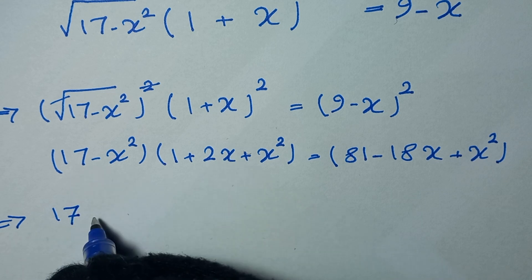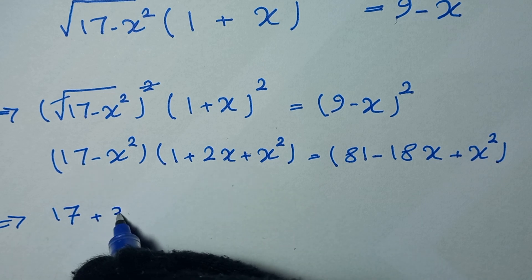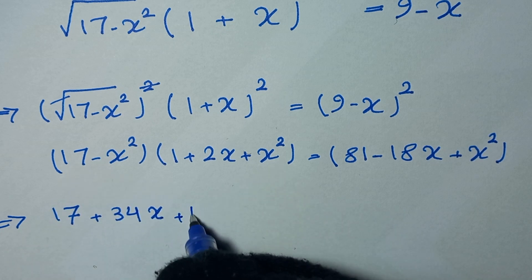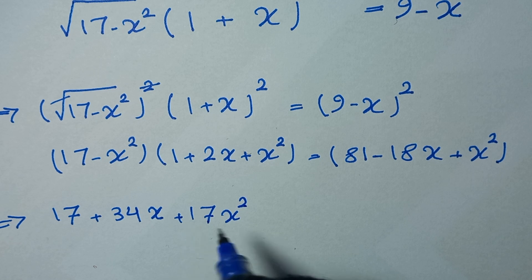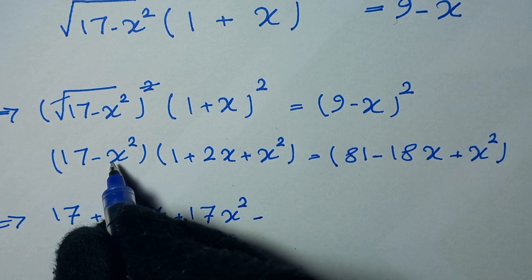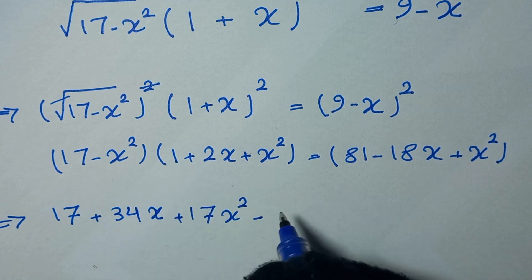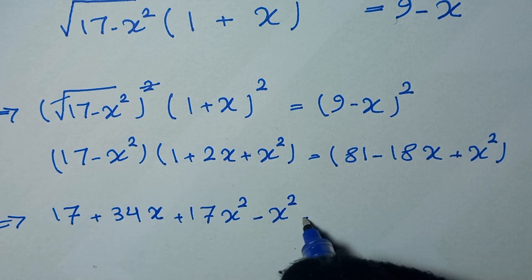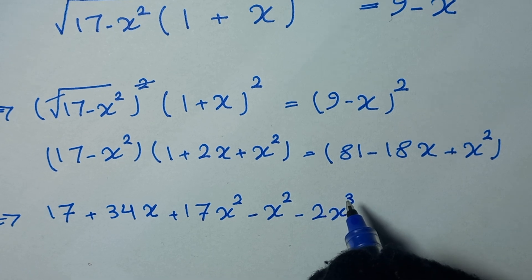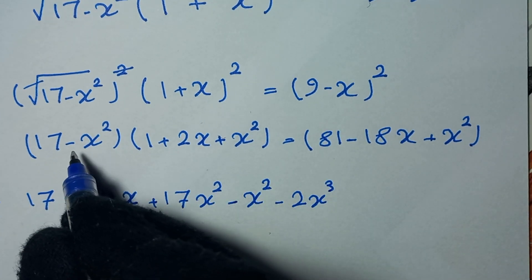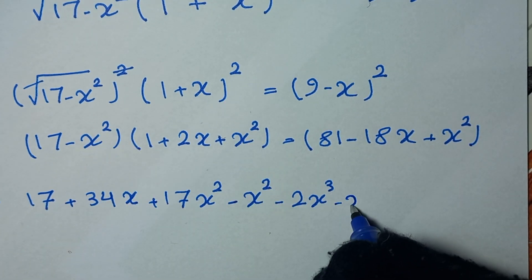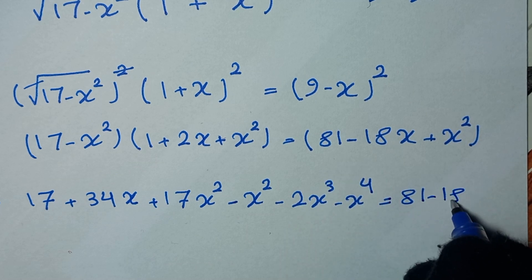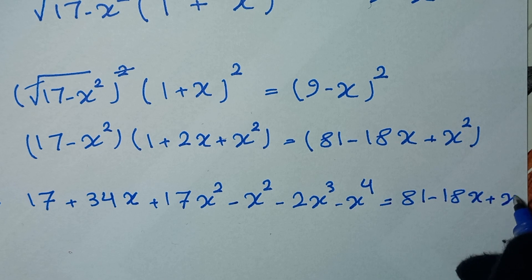So in the next step, 17 times 1 is 17, 17 times 2x is 17x, negative x squared times 1 is negative x squared, negative x squared times 2x is negative 2x cubed, and negative x squared times x squared gives negative x to the power of 4, is equal to 81 minus 18x plus x squared.